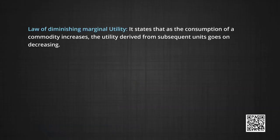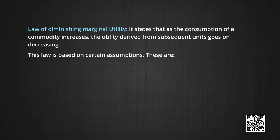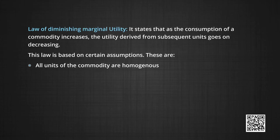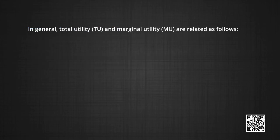The law of diminishing marginal utility states that as the consumption of a commodity increases, the utility derived from each subsequent unit goes on decreasing. This law is based on certain assumptions. These are: one, that all units of the commodity are homogenous, that is, they are identical; and second, the time of consumption remains the same.